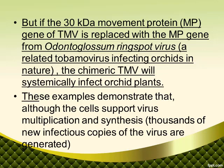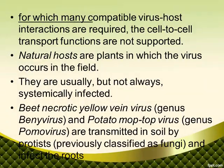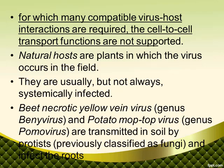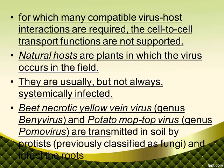— a related tobacco mosaic virus infecting orchids in nature — the chimeric TMV will systemically infect orchid plants. These examples demonstrate that although the cells support virus multiplication and synthesis of thousands of new infection copies, for which many compatible virus-host interactions are required, the cell-to-cell transport functions are not supported. Natural hosts are plants in which the virus occurs in the field; they are usually, but not always, systemically infected.